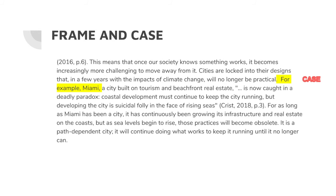There she's connecting to the upcoming case. For example, Miami — the case — a city built on tourism and beachfront real estate, 'is now caught in a deadly paradox: coastal development must continue to keep the city running, but developing the city is suicidal folly in the face of rising seas.' For as long as Miami has been a city, it has continuously been growing its infrastructure and real estate on the coasts, but as the sea levels begin to rise, those practices will become obsolete. It is a path-dependent city — it will continue doing what works to keep it running until it no longer can. Note how she brings back the frame at the end of the paragraph. Well done.